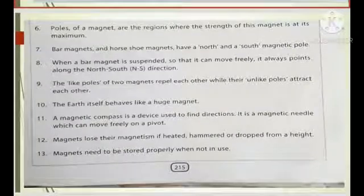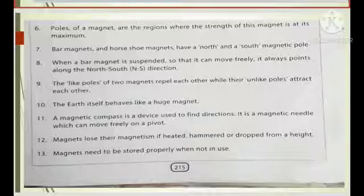Now the sixth one is there. Poles of a magnet are the region where the magnetism or the strength of the magnet is maximum. Number seven, bar magnet and horseshoe magnets have a north and south magnetic poles. The like poles of two magnets means same pole, north-north, south-south, repel each other while unlike poles attract each other. Tenth one, the earth itself behaves like a huge magnet. Eleventh, a magnetic compass is a device used to find the directions. It is a magnetic needle which can move freely on a pivot. Now the twelfth one, magnets lose their magnetism if heated, hammered or dropped. And last one, magnets need to be stored properly when not in use to maintain their magnetism.